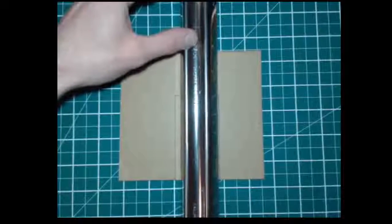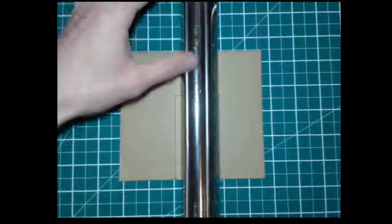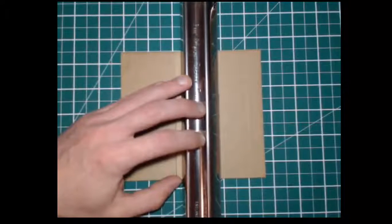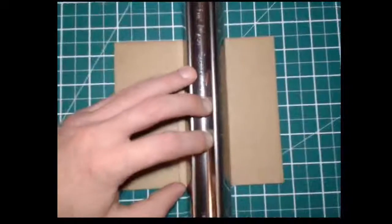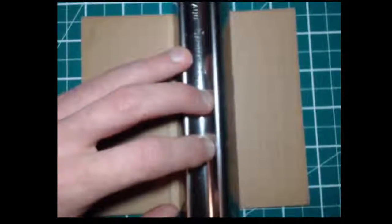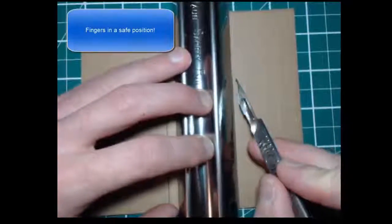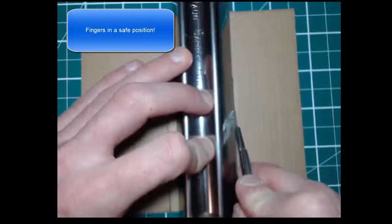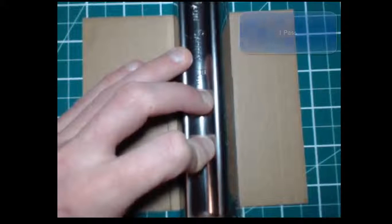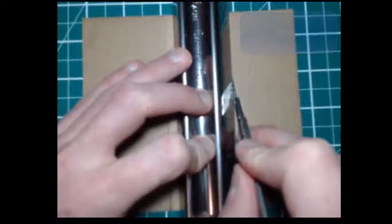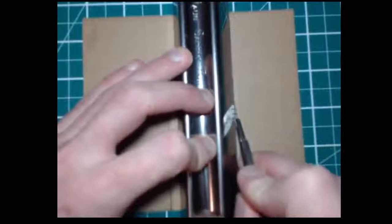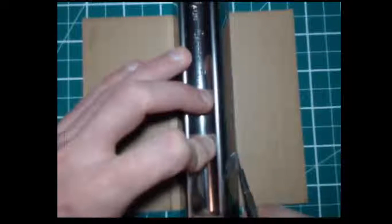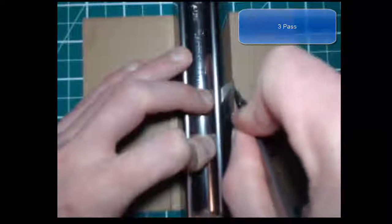Line up the edge of the ruler as close as you can to your line, like so. And I put the very tip of the knife right into the corner and I just slowly pull back with the knife. That's one pass, two passes, three passes, and four.